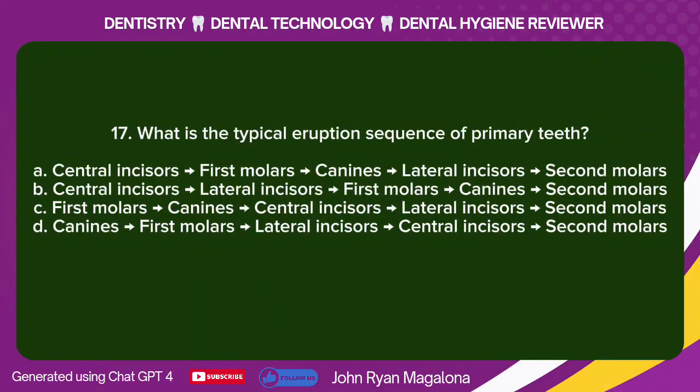Question 17: What is the typical eruption sequence of primary teeth? A. Central incisors, canines, first molars, lateral incisors, second molars. B. Central incisors, lateral incisors, first molars, canines, second molars. C. First molars, canines, central incisors, lateral incisors, second molars. D. Canines, first molars, lateral incisors, central incisors, second molars. Answer: B. Central incisors, lateral incisors, first molars, canines, second molars.